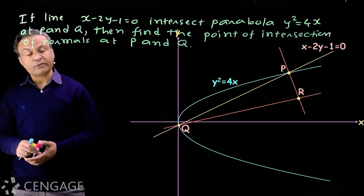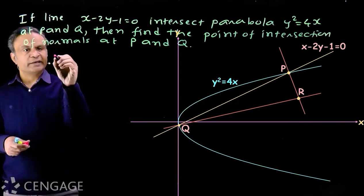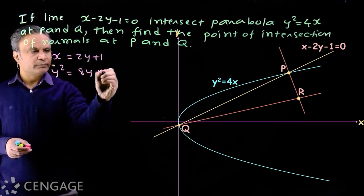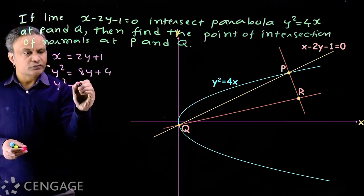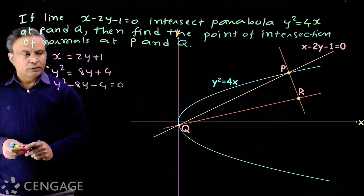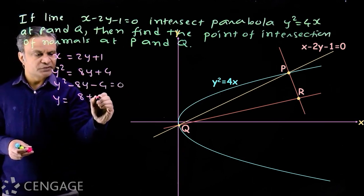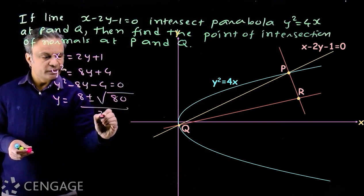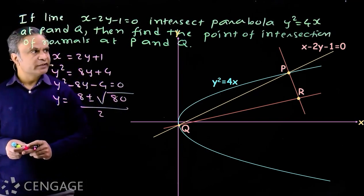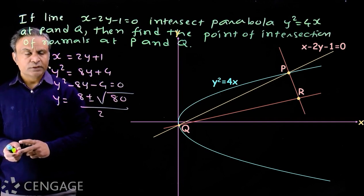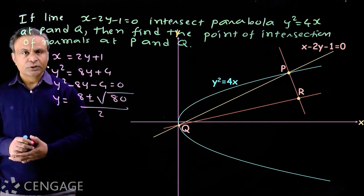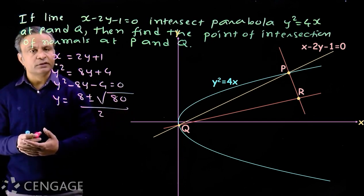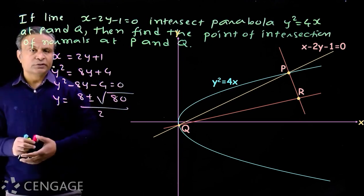The calculations can be very heavy. From the line we get x = 2y + 1, putting into the parabola gives y² = 8y + 4, i.e., y² − 8y − 4 = 0. The roots are y = (8 ± √80) / 2, which are irrational. Correspondingly the x-values are also irrational. So if we use this method, finding equations of normals and then solving them will involve huge calculations.